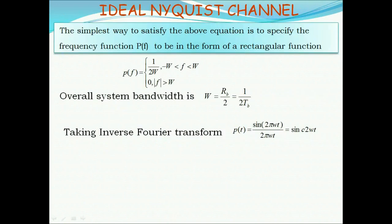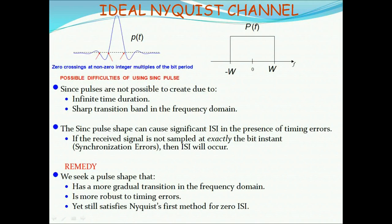Ideal Nyquist channel: the simplest way to satisfy the frequency domain condition is to specify P(f) as a rectangular function — P(f) = 1/(2W) for |f| ≤ W, and 0 for |f| > W. The overall system bandwidth is W = Rb/2 = 1/(2Tb). Taking the inverse Fourier transform gives P(t) = sinc(2Wt). In the ideal Nyquist channel, the input signal P(t) should be a sinc pulse with a rectangular Fourier transform.